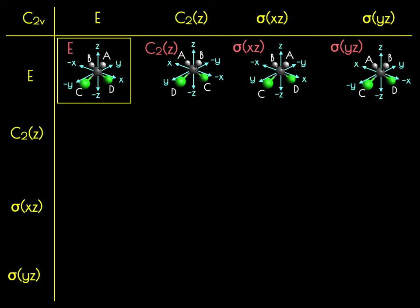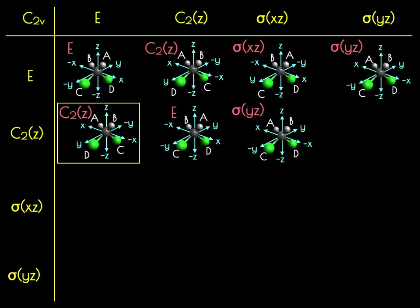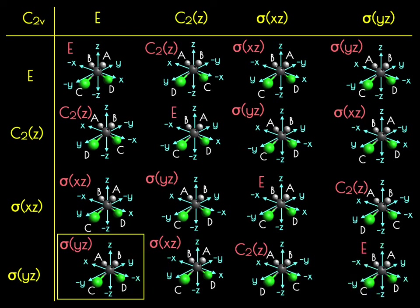Moving to the C2Z row: performing C2Z twice returns the original molecule, so C2Z times C2Z equals E. Doing C2Z then reflecting through the XZ mirror plane gives sigma YZ. Doing C2Z then reflecting through the YZ plane gives sigma XZ. Continuing through the third and fourth rows we obtain all remaining elements and complete the group multiplication table by manipulating the three-dimensional object.